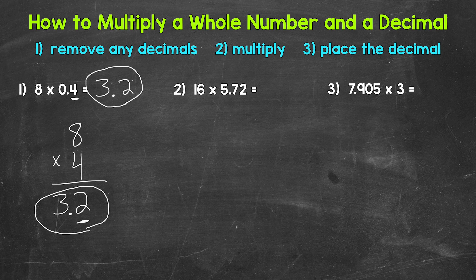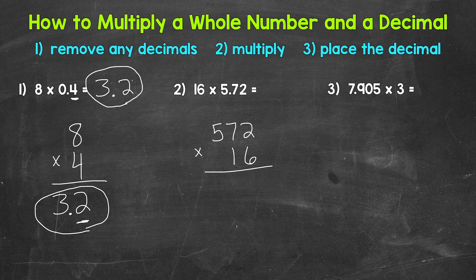Moving on to number two, we have 16 times five and seventy-two hundredths. Our first step: remove any decimals. So let's rewrite this as 572 times 16. I'm writing 572 on top because it has three digits and 16 has two digits — I find it easier to set up a multiplication problem when the number with more digits is on top. Remember, multiplication is commutative, so order doesn't change the answer. Two times five is ten and five times two is ten — we get the same answer either way.